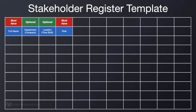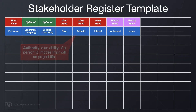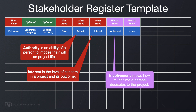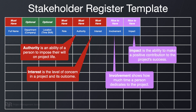Then we have four critical columns: authority, interest, involvement, and impact. This is different from what the PMBOK guide teaches because I have a different perspective on stakeholder analysis. Authority is the ability of a person to impose their will on project life. Interest is the level of concern in a project and its outcome. Involvement shows how much time a person dedicates to the project. Finally, impact is the ability to make a positive contribution to the project's success.